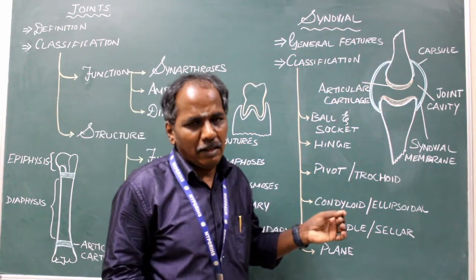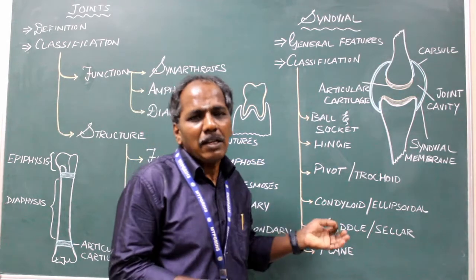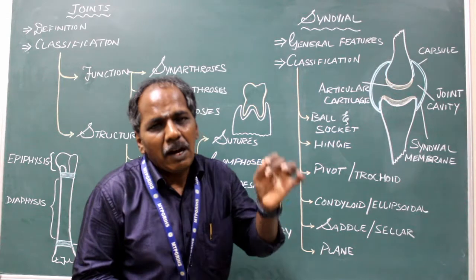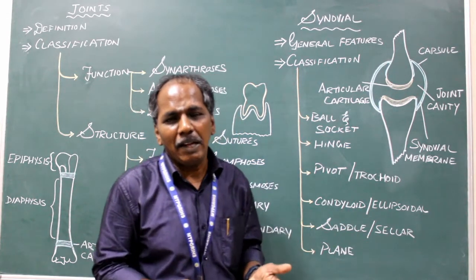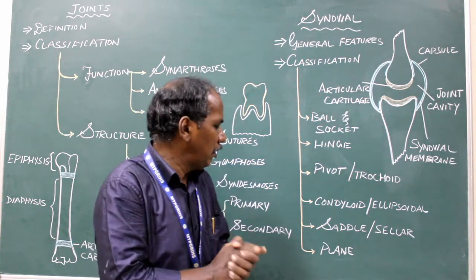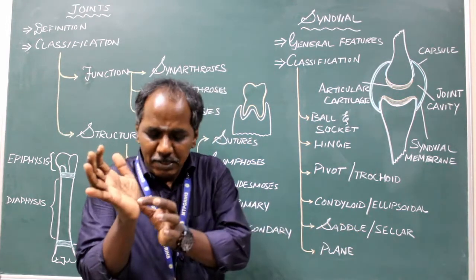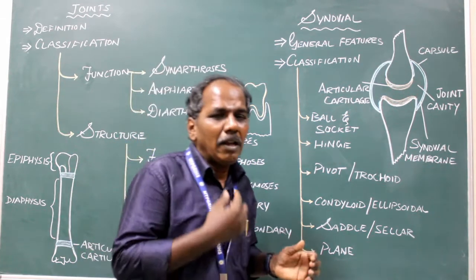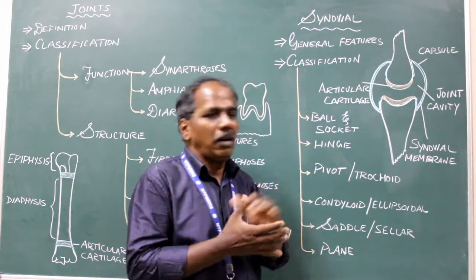Saddle variety. In this type of joint, one of the articular surfaces is saddle-shaped — like the seat of a horse — and the other articular surface is shaped like the legs of a rider sitting on the saddle. Examples: sternoclavicular joint, acromioclavicular joint, first carpometacarpal joint, incudomalleolar joint, and calcaneocuboid joint.